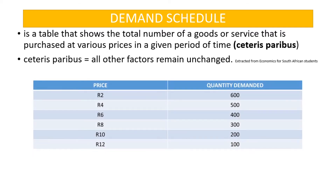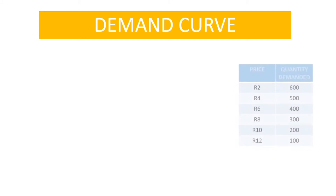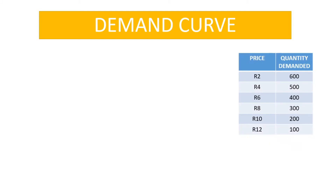This is an example of a demand schedule for drinks. It shows the quantity of drinks that has been demanded at different price levels. Now, to draw the demand curve we need a demand schedule.